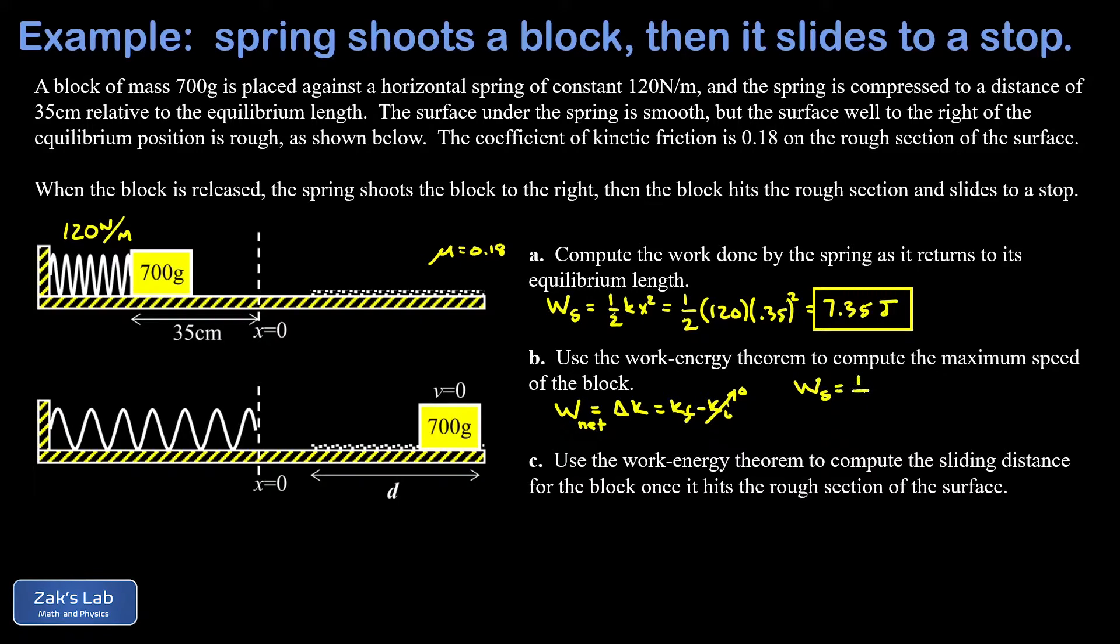Results in this final kinetic energy, which is given by one-half m v squared. Now this is before we've hit the rough patch. We can go ahead and solve symbolically for v. I multiply both sides by 2, divided by m, and square root the result. So my symbolic solution is that v is twice the work done by the spring divided by m and square rooted.